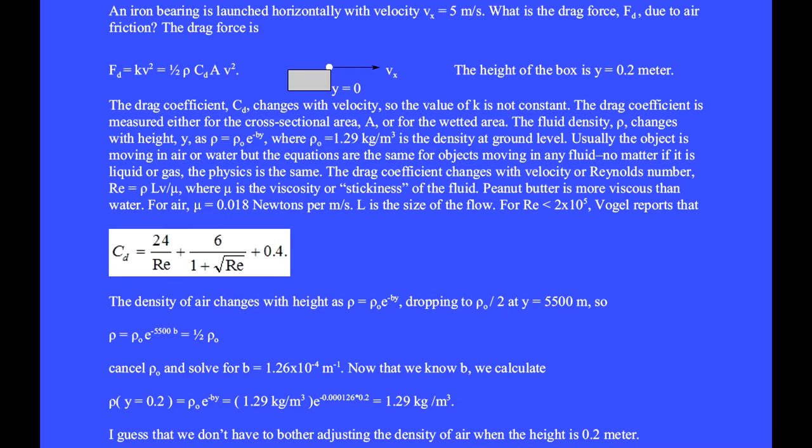What is the drag force Fd due to air friction? The drag force is commonly written as kv squared or one half times the density of the fluid in which the object is moving times the drag coefficient times either a cross sectional area or a surface area times the velocity squared.